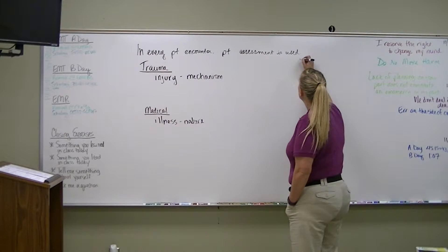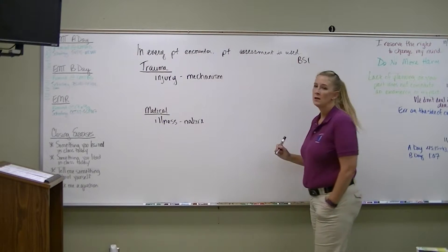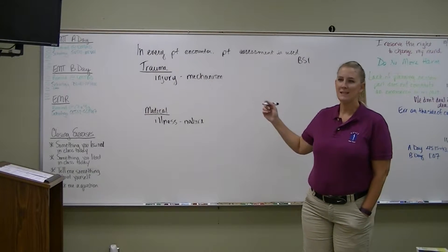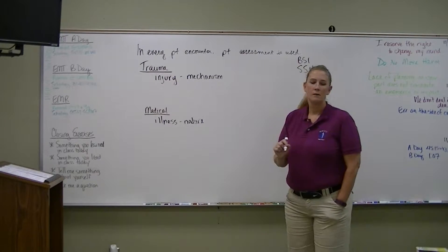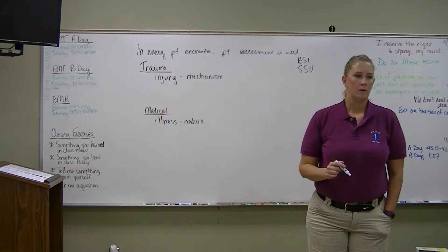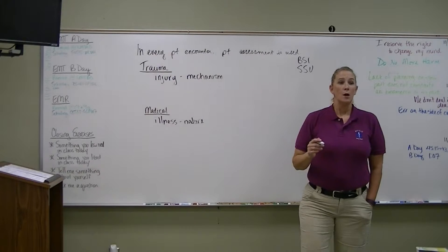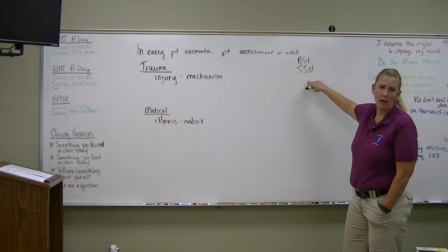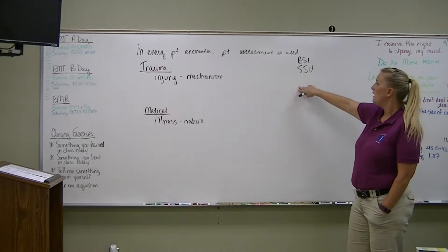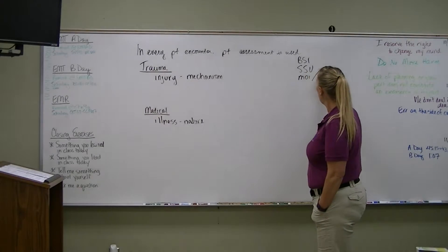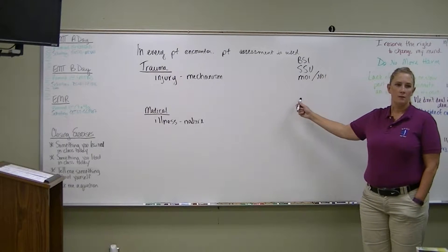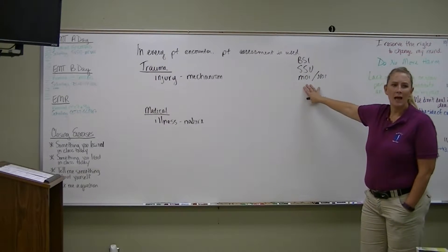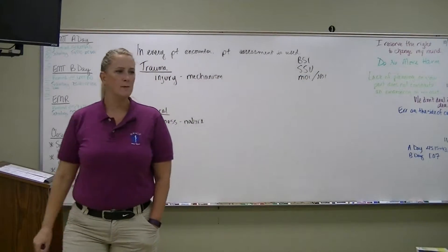In our assessment, one of the very first things we do is body substance isolation precautions — we take BSI. The next thing is scene safety. You don't want to hurt yourself trying to help someone else. Once we're done with BSI and scene size-up, we deal with our mechanism of injury or nature of illness — MOI/NOI. It's at this point that we decide which assessment to use: trauma or medical.